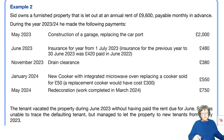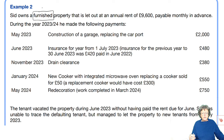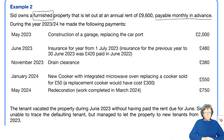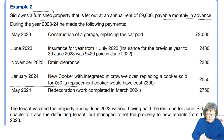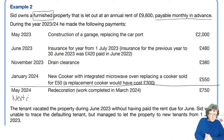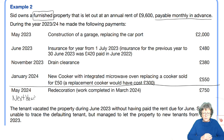Sid owns a furnished property. As you read your questions, you're thinking things through as you go. Annual rent is £9,600, payable monthly in advance. We've got the construction of a garage replacing the carport. Let's make sure we've got all the dates first — that one is not in this year. In June, insurance for the year from the 1st of July: insurance for the previous year was £420, this year it's £480.